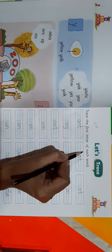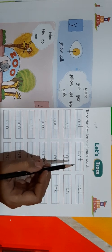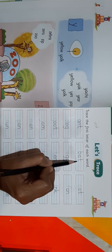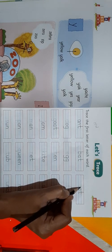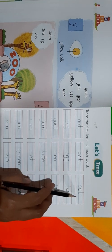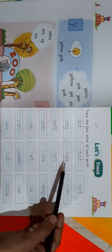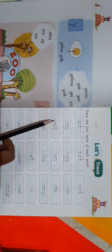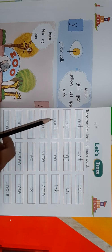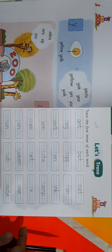Come to the next word. It is B. So I will trace B — standing line, right side curve. And I will read the word: B-A-T, bat. Isn't it easy? Now come to the next — it is C. Write C here and read the word: C-A-T, cat. Understood? You will have to trace the first letter of each word on the whole page, and after tracing, you will also have to read the word. Understood?